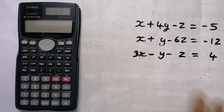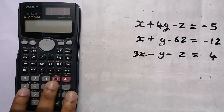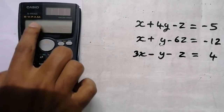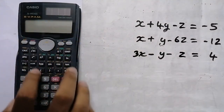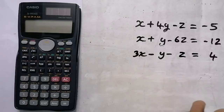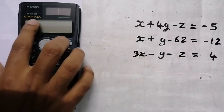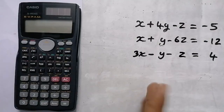Now we will do the Gauss Elimination method. I am using the 991ms. This is how we will do 991es. The 991ms is a basic version, and 991es is an advanced version.